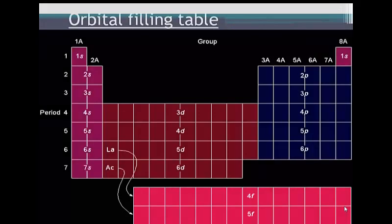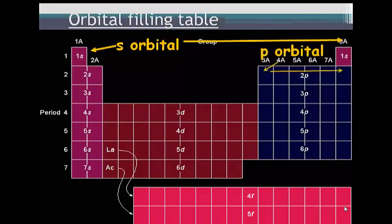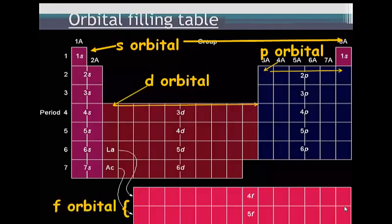If I further separate the periodic table, what I can find are the orbitals. In the first two columns, I have the S orbital. This also includes the first period, or the 1S. The P orbitals are in the last columns of the periodic table. The middle columns are the D orbitals, and the final two are the F orbitals. We'll talk a little bit more about the organization of the periodic table in a later unit.